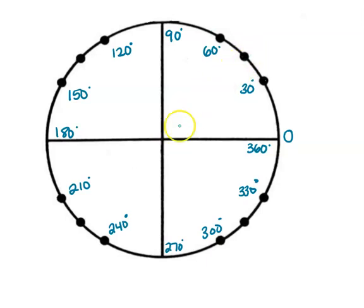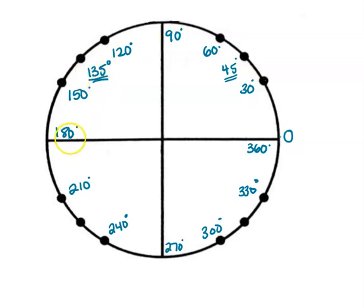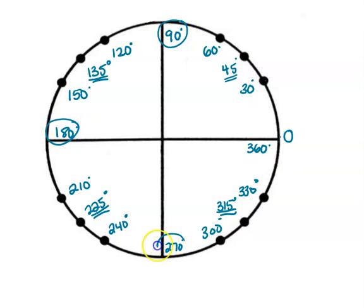Now if I look in between, this is the halfway mark — the halfway between zero and 90 is 45. So the other pattern is adding 45s each time: zero plus 45 is 45, plus 45 is 90, plus 45 is 135, plus 45 is 180, plus 45 is 225, plus 45 is 270, plus 45 is 315, plus 45 is 360. The axis numbers are going to be part of both the 30-60-90 pattern as well as the 45 pattern.